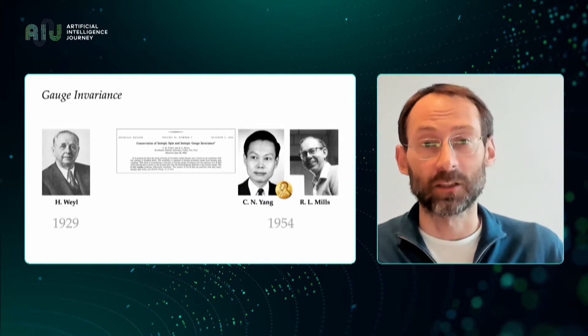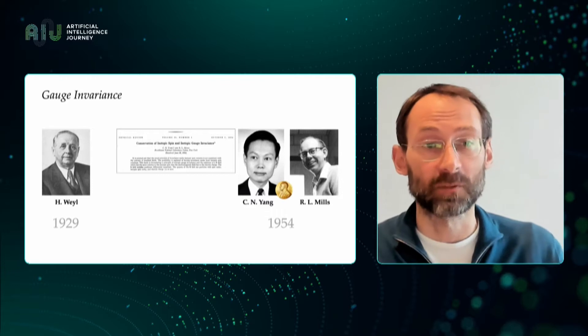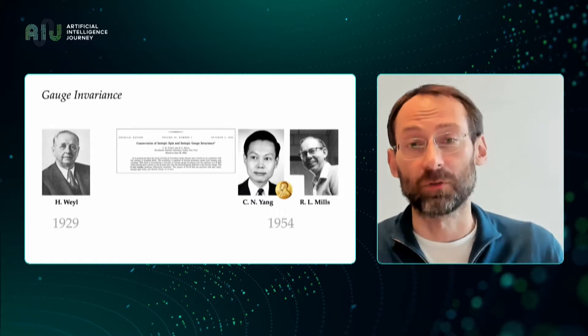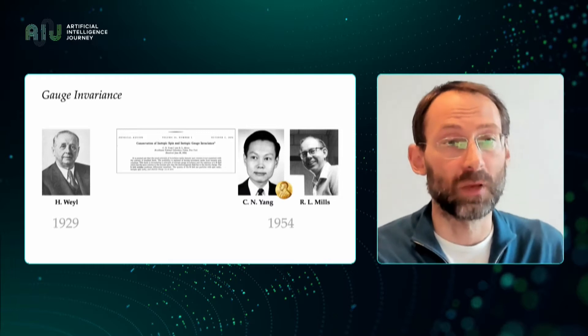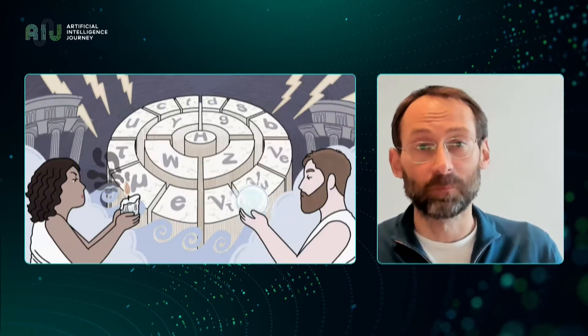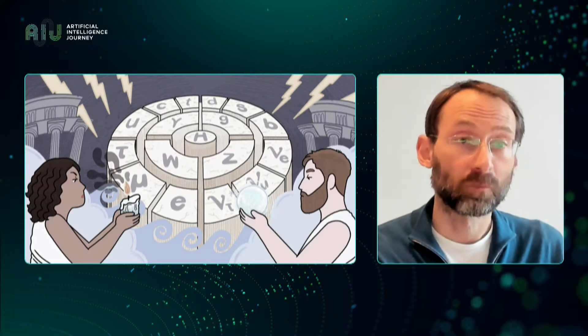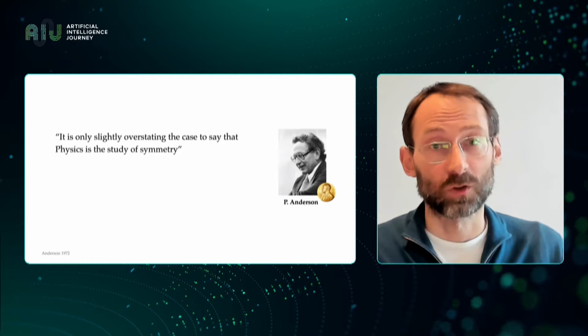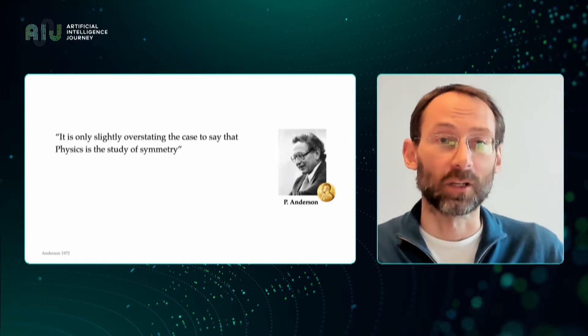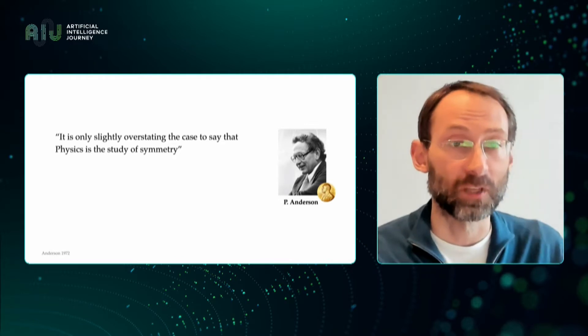The impact of the Erlangen program on geometry and mathematics in general was very profound. It also spilled to other fields, in particular physics, where symmetry considerations allowed to derive fundamental conservation laws from first principles. It took several decades until these ideas, through the notion of gauge invariance, proved successful in unifying all the fundamental forces of nature, maybe with the exception of gravity. This is called the standard model, and it describes almost all the physics we currently know. I can only repeat the words of Nobel-winning physicist Philip Anderson, that it is only slightly overstating the case to say that physics is the study of symmetry.